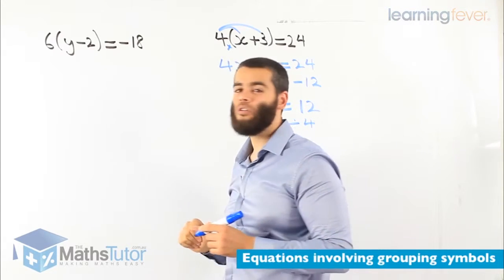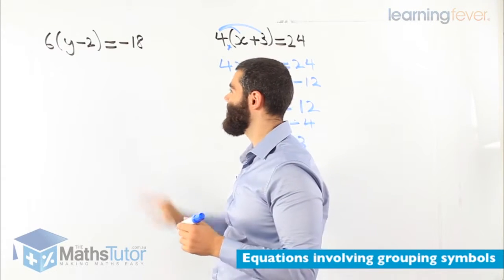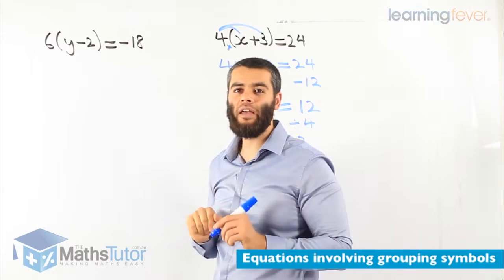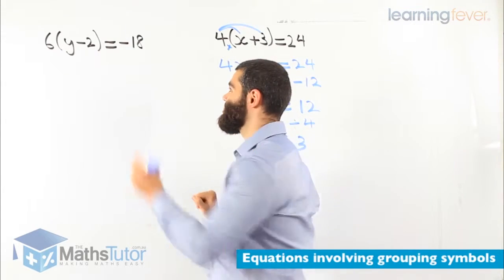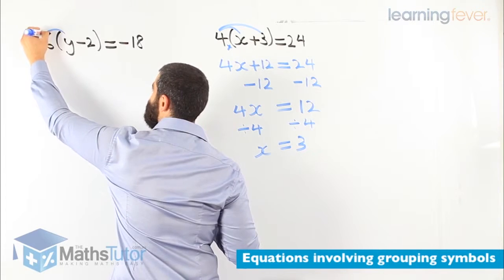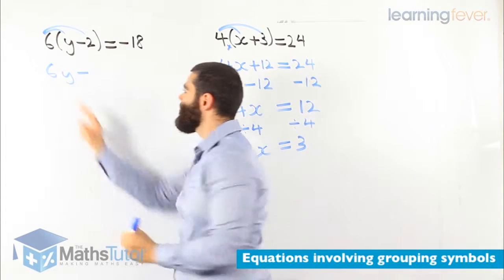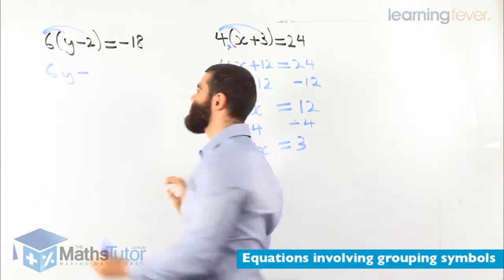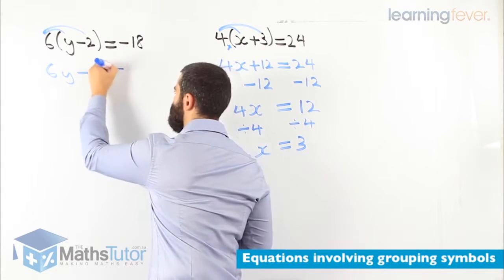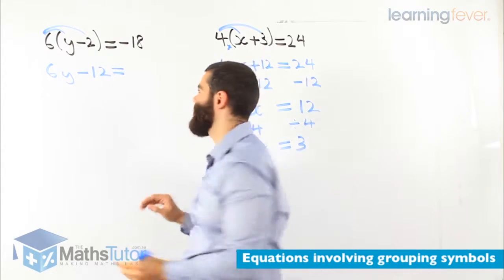Another one. 6, open bracket, y minus 2, close the bracket, equals to minus 18. As soon as you see that, you know straight away, I'm going to expand. Let's expand first. 6y minus 6 times negative 2 is negative 12, equals to negative 18.